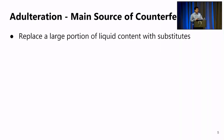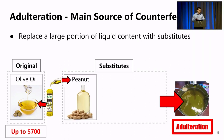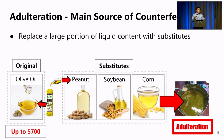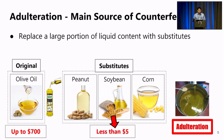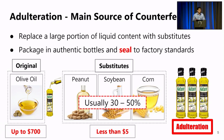What do we mean by that? Adulteration means that the counterfeiters replace a large portion of the original liquid content with cheaper or potentially harmful substitutes. Let's take olive oil as an example. Most expensive extra virgin olive oil could cost up to $700, but the substitutes like peanut oil, soybean oil, or cotton oil only cost less than $5. To gain economic benefit, the counterfeiters usually replace 30 to 50 percent of the original liquid content. What's scarier, this adulterated content is actually packaged in authentic bottles and sealed to factory standards.